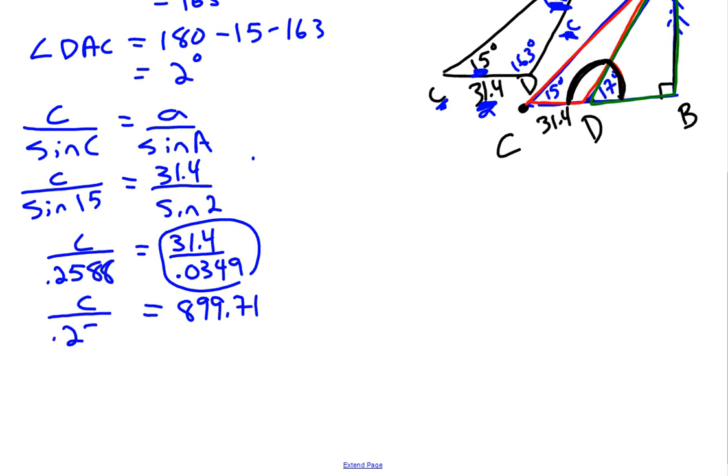Haven't changed anything on the left yet. Now we have an equation we need to solve for C. C is being divided by 0.2588. We undo that division by doing the inverse operation. So we're going to multiply by 0.2588. Whatever we do on the left, we better do on the right. 0.2588 divided by 0.2588 is just one. One times C is just C. So on the left we have C. Go to the calculator. 899.71 times 0.2588 works out to 232.8.